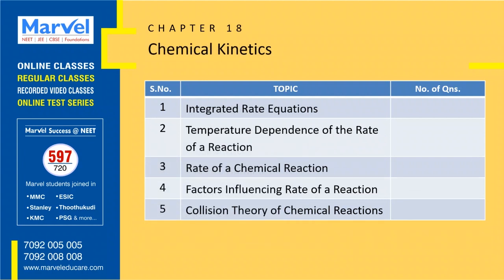Next chapter: Chemical Kinetics — 21 questions from 8 years, expecting either 1 or 2. The first 2 topics have 14 questions, and the remaining 3 topics have 7 questions. From the 14 questions in the first 2 topics, you can score 1 or 2 questions. On the whole, 5 topics are covered over 8 years, so definitely 8 marks — that is 2 questions.